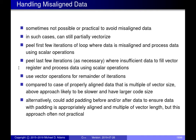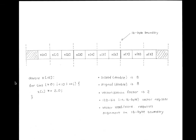This slide has an example illustrating how we handle misaligned data when vectorizing loops. Assume: size of double is 8 bytes, alignment of double is 8 bytes, vector registers are 128-bit (16 bytes) per register, and vector loads and stores require data aligned on 16-byte boundaries. We'll consider vectorizing a loop over this data with a vectorization factor of two.